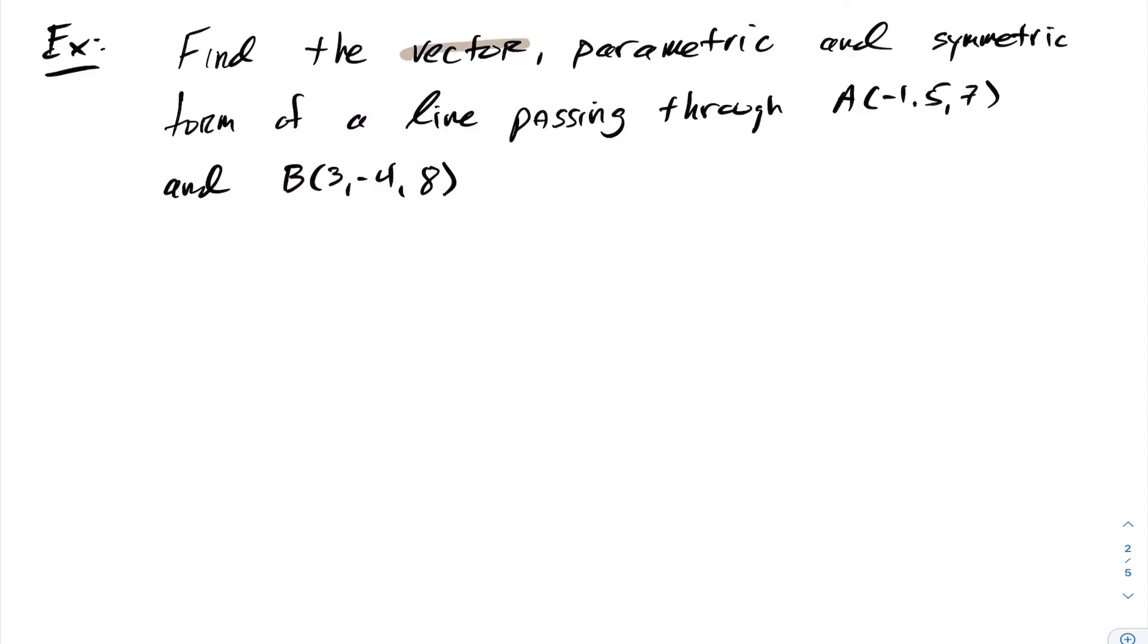For our first example here we want to find the vector, parametric, and symmetric form of a line that passes through the following two points. Okay, well to pass through the following two points I need to find my direction vector. Therefore the direction vector can be expressed as AB in which case we end up getting 4, negative 9, and 1.